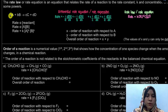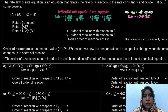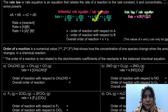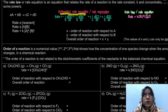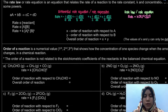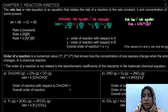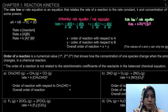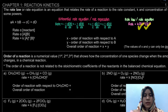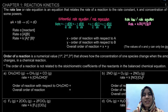For rate law, we're only going to write rate equal to K, which is our rate constant, and then concentration of the reactants only. Even though we have species C and D as products, we're not going to include them — only A and B. The power raised here does not depend on the stoichiometry; we're going to determine it later. This power is what we call the order of reaction.